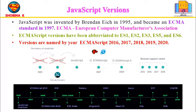ECMAScript versions have been abbreviated to ES1, ES2, ES3, ES5, and ES6. Since 2016, the versions are named by year, like ECMAScript 2016, 2017, 2018, 2019, and 2020. The original JavaScript — ES1, ES2, and ES3 — was released from 1997 to 1999. ECMAScript 2009, also known as ES5, was the first major revision, and ECMAScript 2015, also known as ES6, was the second major revision.